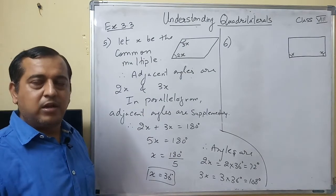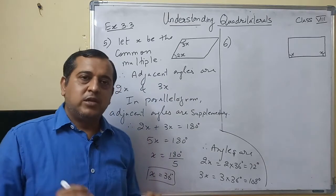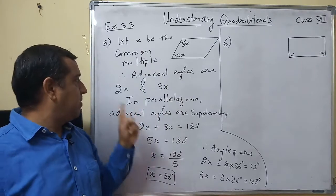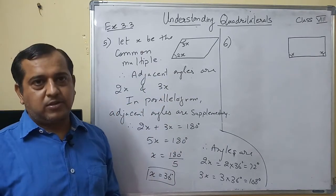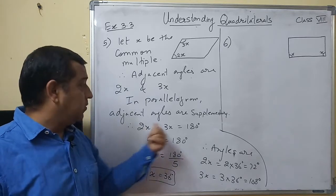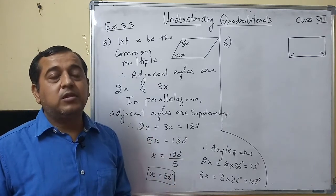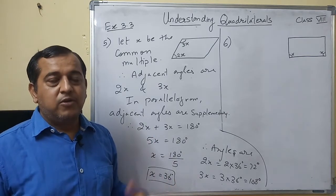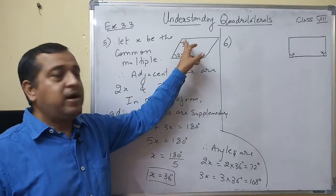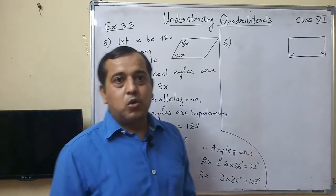The angles were given in the form of a ratio, adjacent angles given in ratio form. With x equal to 36 degrees, we get the two angles as 72 degrees and 108 degrees.